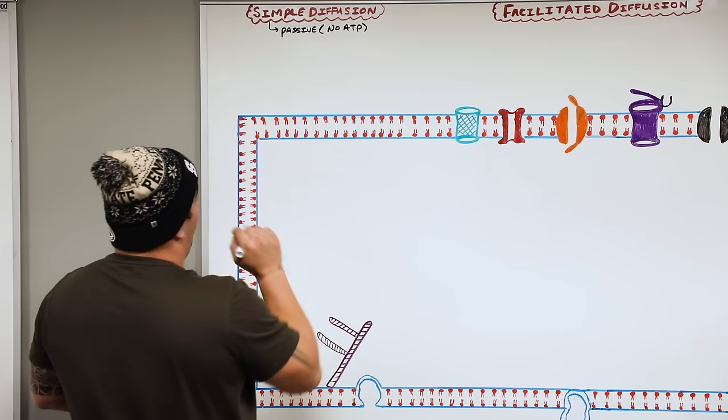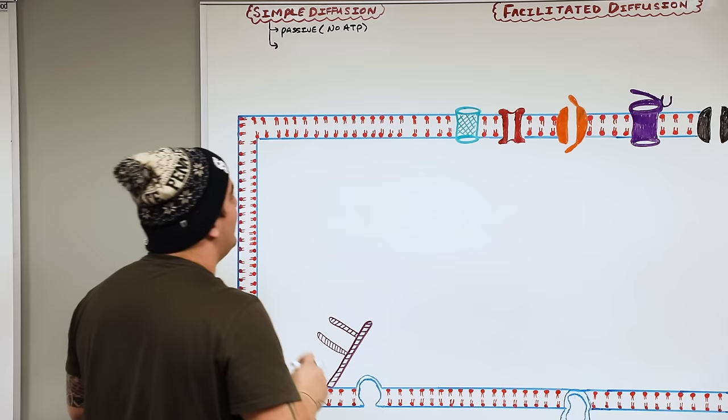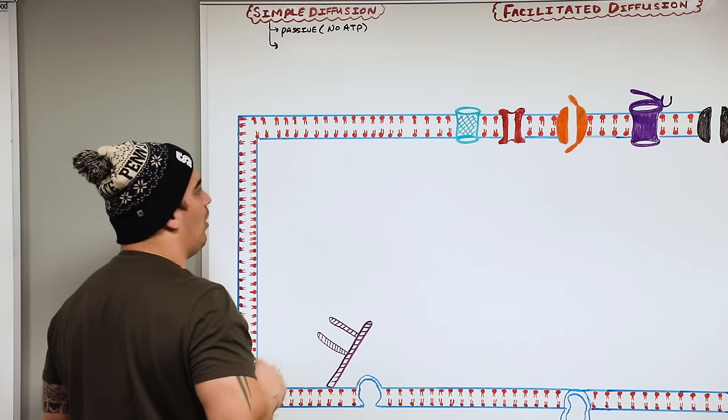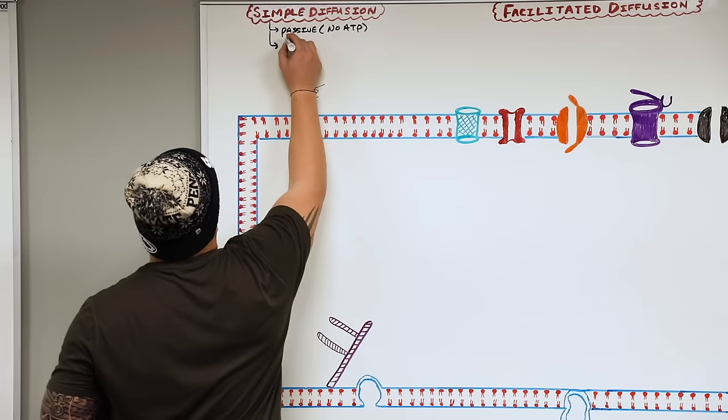The second thing to know about simple diffusion is that it allows for particular types of molecules to move from areas of high concentration to areas of low concentration through the cell membrane. So we're moving things from a high concentration gradient to a low concentration gradient. That is the concept of simple diffusion.